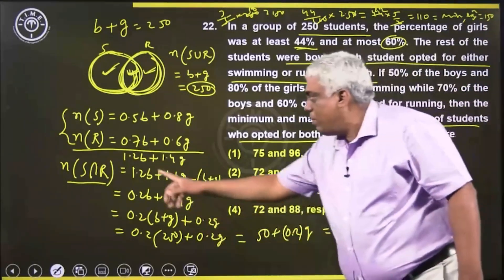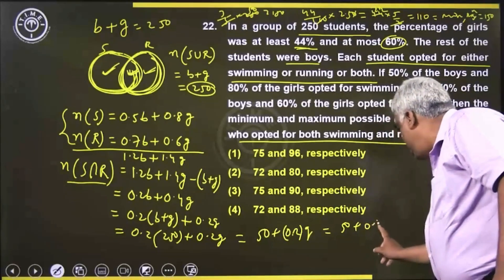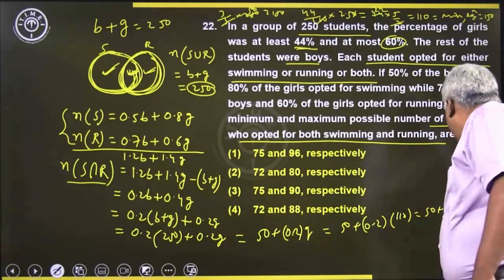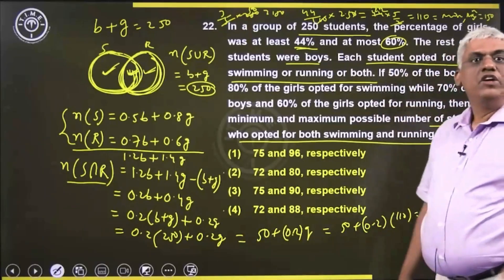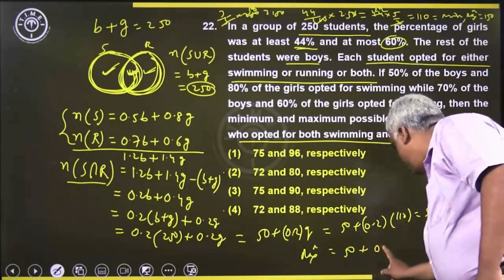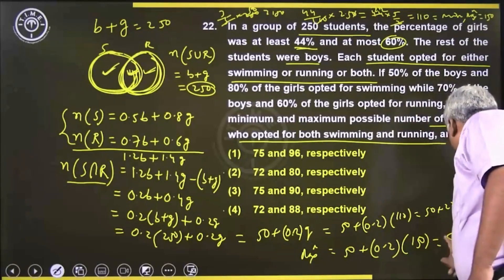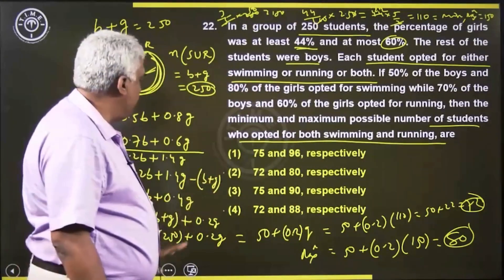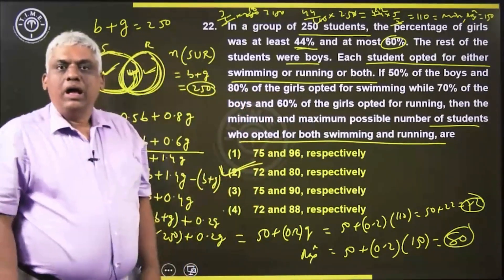The minimum number of students doing both is when girls are minimum: 50 + 0.2 × 110 = 50 + 22 = 72. The maximum is when girls are maximum: 50 + 0.2 × 150 = 50 + 30 = 80. So the minimum number of students doing both swimming and running is 72 and maximum is 80. The answer is option 2.